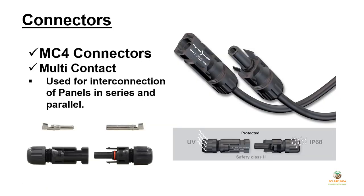Coming to the next topic: connectors. You might remember that MC4 connectors are connected to solar panels. In a solar system, MC4 connectors are used to interconnect the panels and are also provided with inverters, connecting the output terminals of solar panels to the inverter input terminals. The name MC4 came from the Multi-Contact company, which first developed these connectors. The number 4 indicates the size — that's 4 mm. MC4 connectors come in pairs: a female MC4 connector and a male MC4 connector, where the female is the positive terminal and the male is the negative terminal.